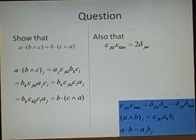Next one, show that epsilon jkl epsilon klm is equal to 2 delta jm.